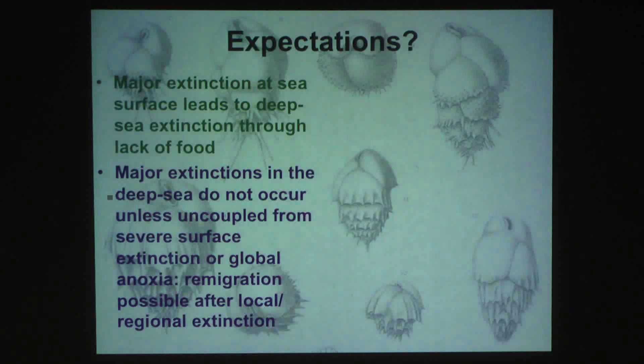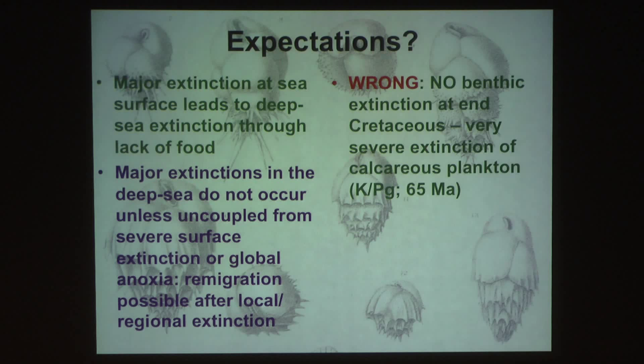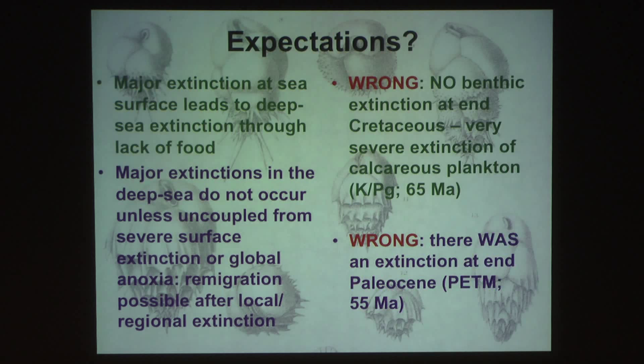There was, in fact, a major extinction of benthic forams. I would have predicted that a major extinction at the sea surface would lead to a deep sea extinction through lack of food — and that was wrong. And then I would have argued that major extinctions in the deep sea don't occur — and that was wrong as well. Well, it keeps you busy.